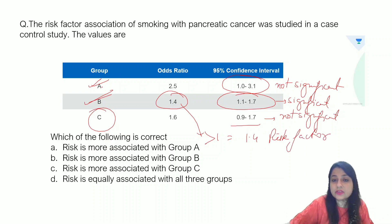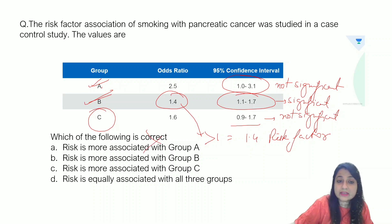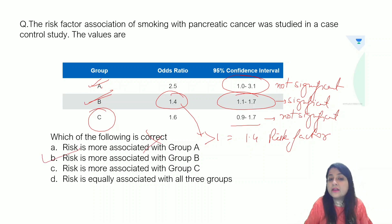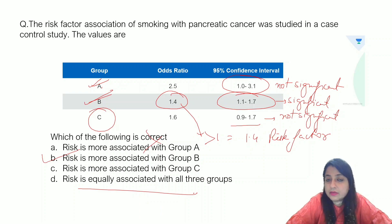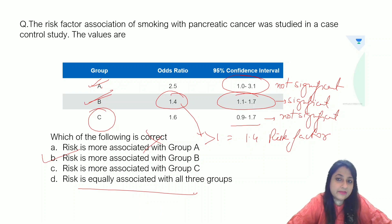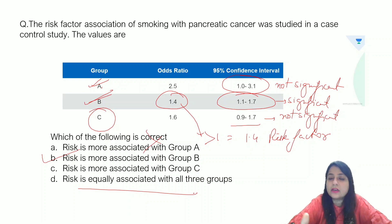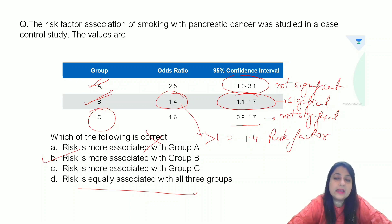So risk is more associated in Group A? Wrong. Risk is more associated in Group B — yes, that is correct. Risk is more associated in Group C? No, it is not significant. Risk is equally associated? Absolutely wrong. You have to look at the confidence interval: if one is included, it's not significant; if one is not included, it is significant. Then look whether it's more than 1 or less than 1 — more than 1 is a risk factor, less than 1 is a protective factor.